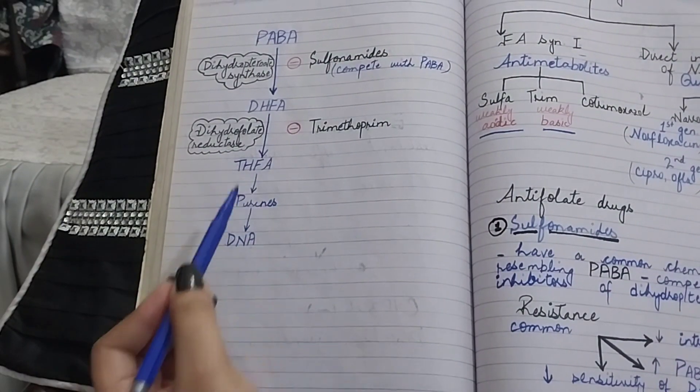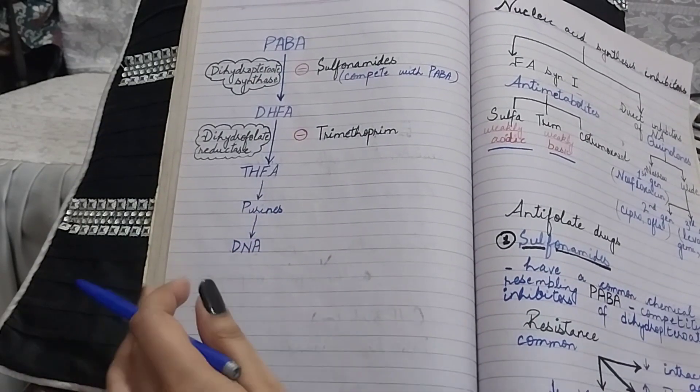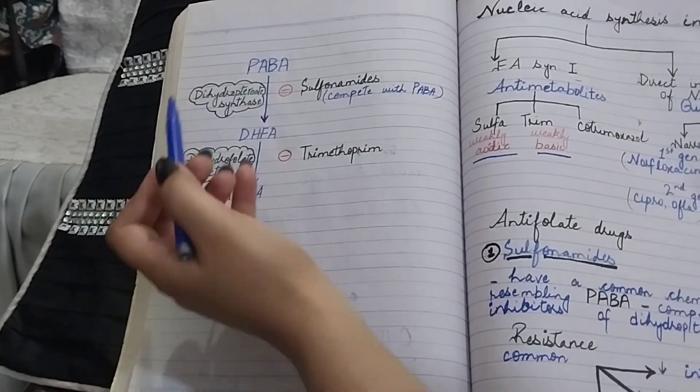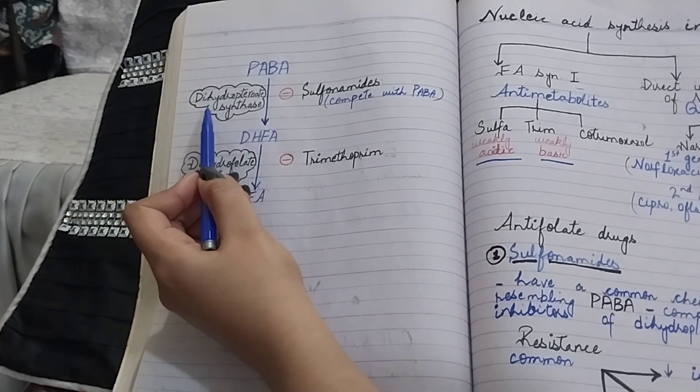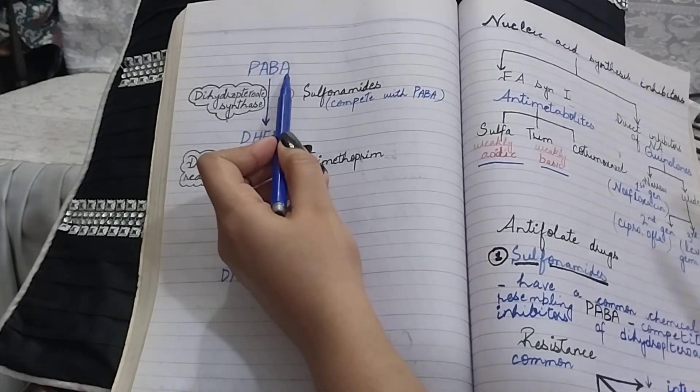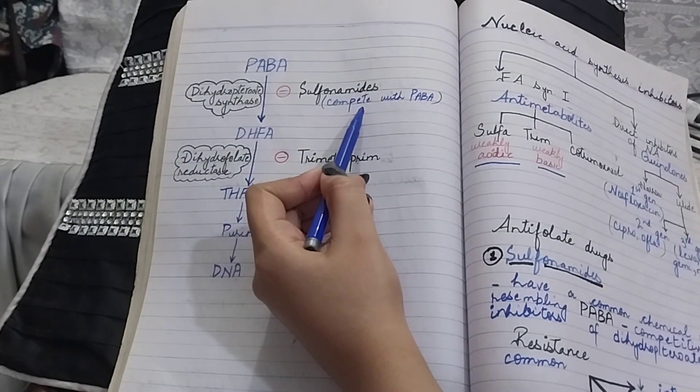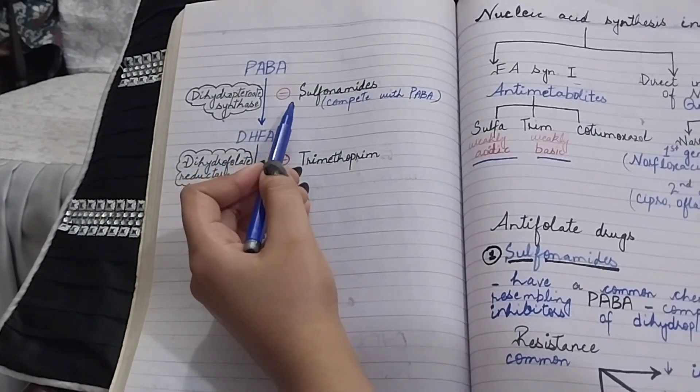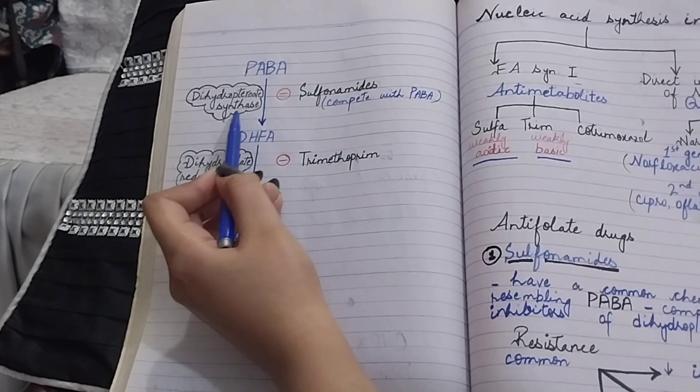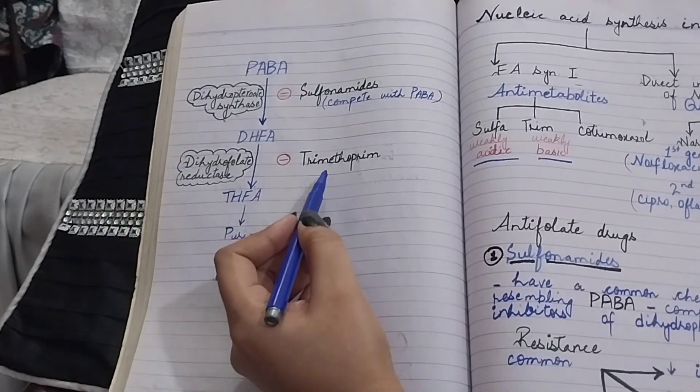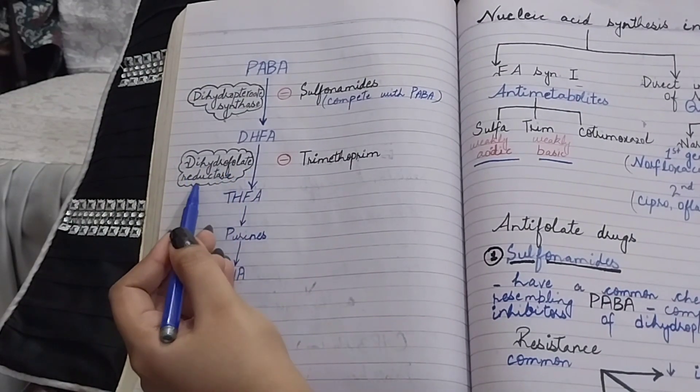Then this tetrahydrofolic acid is changed into purines, which is a constituent of DNA. As PABA is changing into dihydrofolic acid by this enzyme, it means PABA is a substrate for this enzyme. The sulfonamides compete with PABA and act as competitive inhibitors of dihydropteroate synthase because they bind with this enzyme and compete with PABA, while trimethoprim acts as an inhibitor of dihydrofolate reductase.